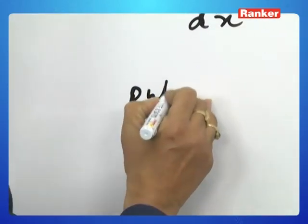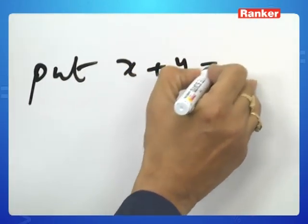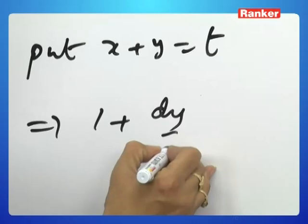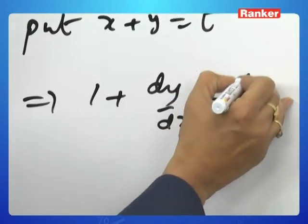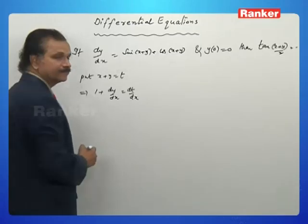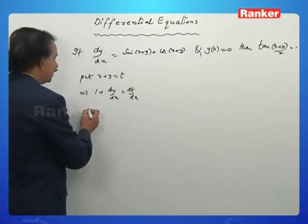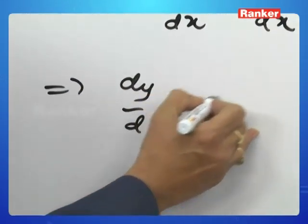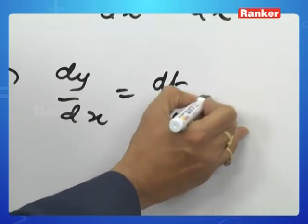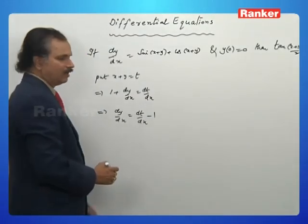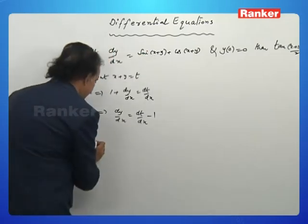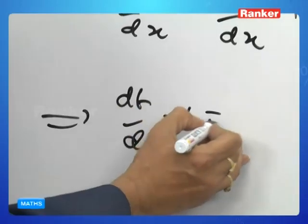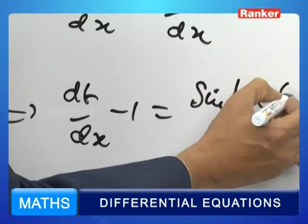Put x plus y equal to t, which implies 1 plus dy/dx equals dt/dx. Therefore dy/dx equals dt/dx minus 1. Let us substitute this back into the problem.